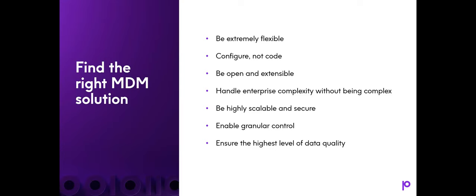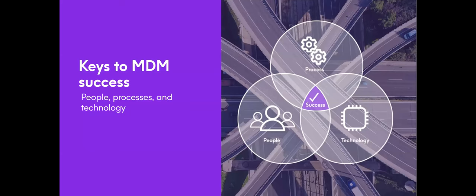To find the right MDM solution, there are key design principles to look for. It all starts with: is it flexible enough? Can it morph to ever-changing business needs, or do I need to change my business to meet product requirements? Can it be open and extensible — providing all the tools and features necessary to manage data — and does it solve for business complexity without making the business complex? It's never just about the product; you also have to factor in the people using that product and the process. All three need to come together to achieve the desired outcome.